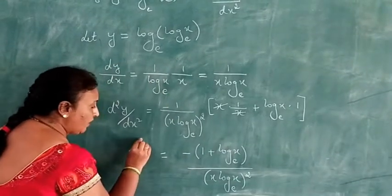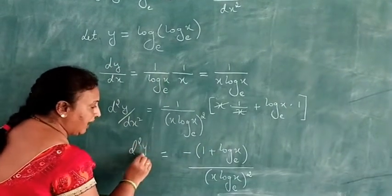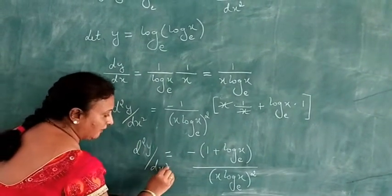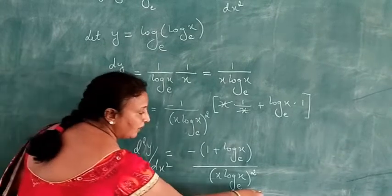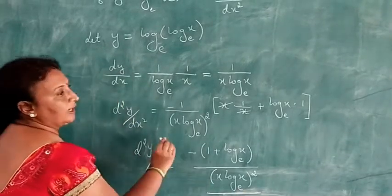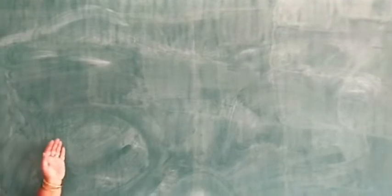Therefore d²y/dx² equals minus (1 plus log x to the base e) divided by (x · log x to the base e) squared. This is a 5-mark problem.